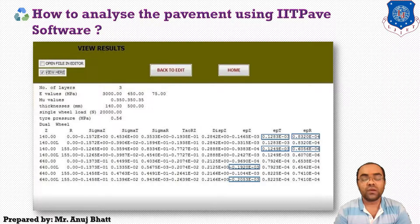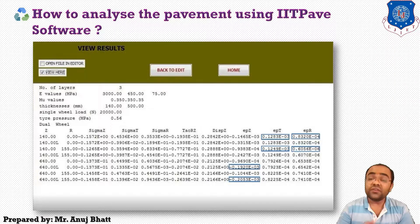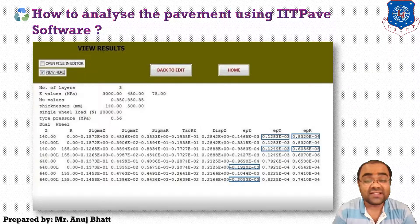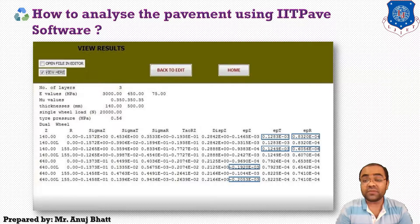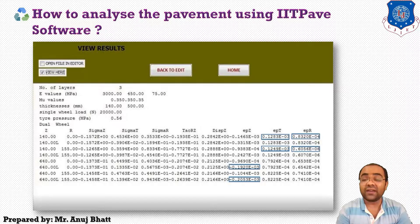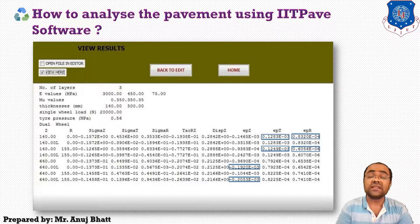The vertical subgrade strain — EPZ — should be less than the permissible value for the design traffic. If the vertical subgrade strain is higher, we have to increase the thickness of the subbase layer.